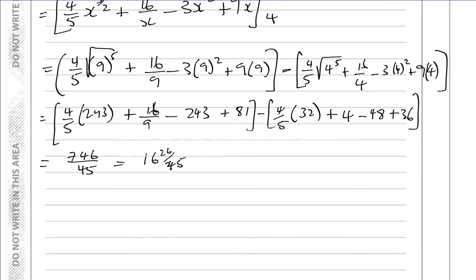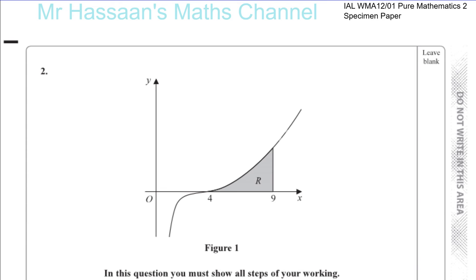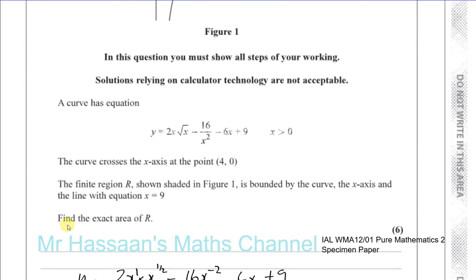Equals 746 over 45, which if you want you can write it in proper fraction form which is 16 and 26 over 45. And they ask us to leave it in this exact form so there's no need for us to round this to 3 significant figures.